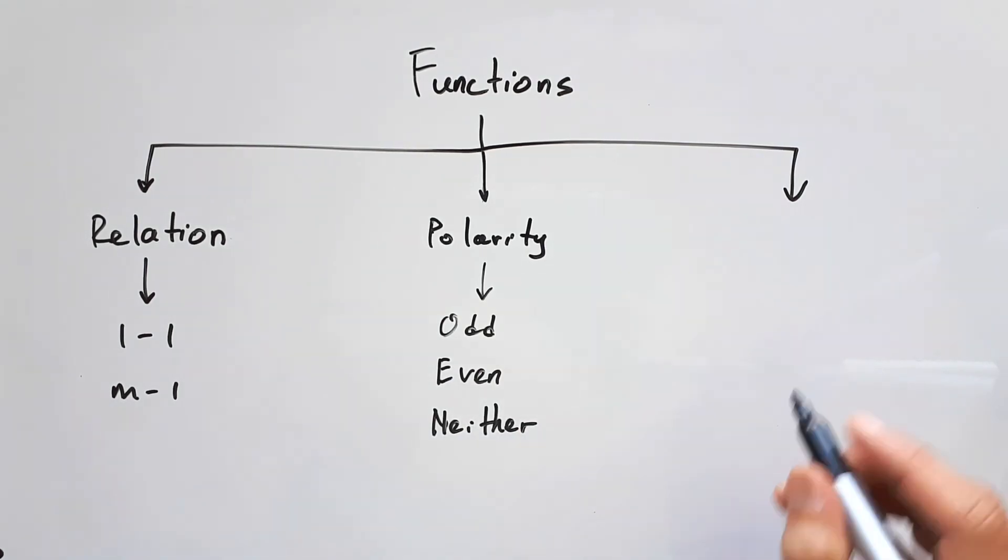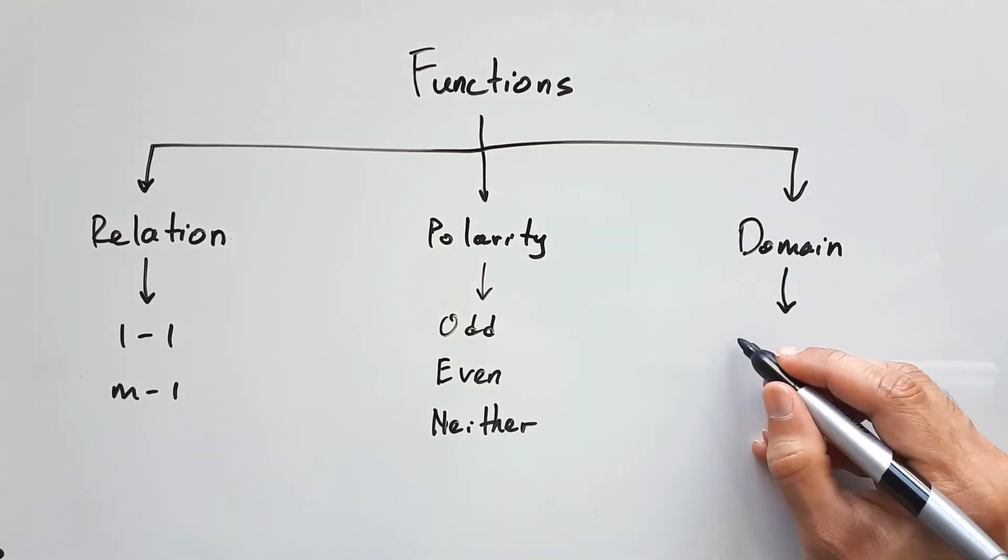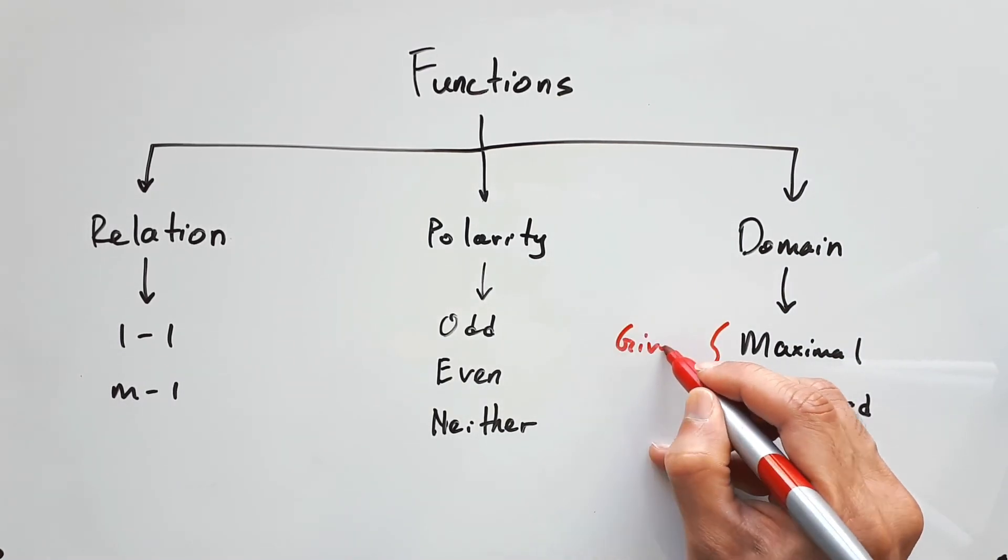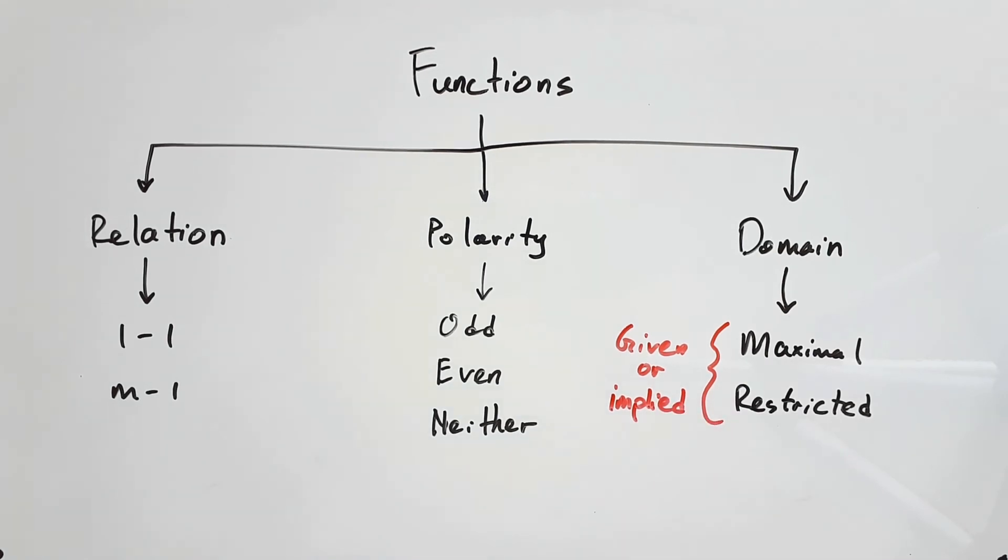And finally, functions can also be described using their domain, which is by far one of the best ways to describe it because this can assist us to draw graphs. So the domain is either going to be maximal or restricted, and it can be given to you in the function, but if it's not, then it's implied and you're supposed to try and work it out using whatever bits of information they've provided to you in the question.